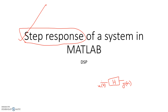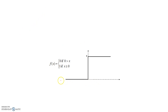That means you are applying a unit step as input and observing what the output is corresponding to that step signal. You already know the importance of the impulse response. Now try to understand why we compute the step response of a system. The unit step definition from signals and systems is: f(x) = 0 if x < 0, and f(x) = 1 if x ≥ 0.